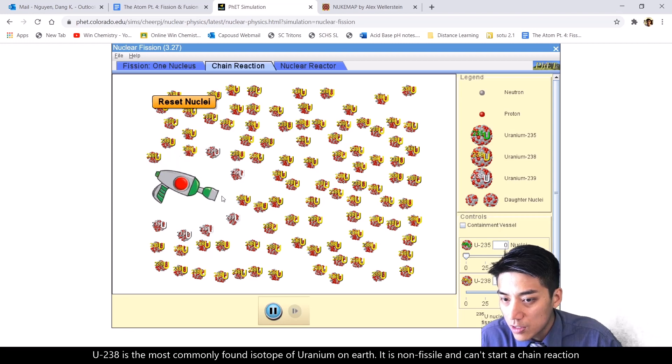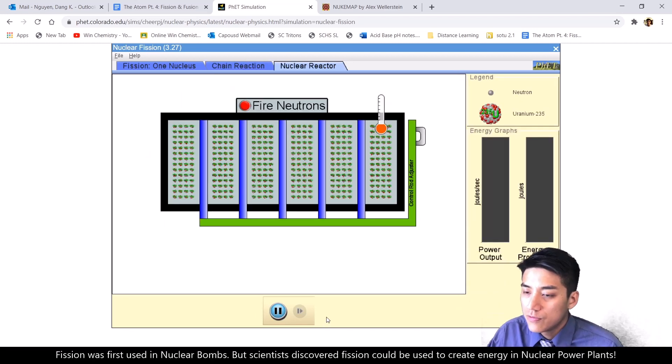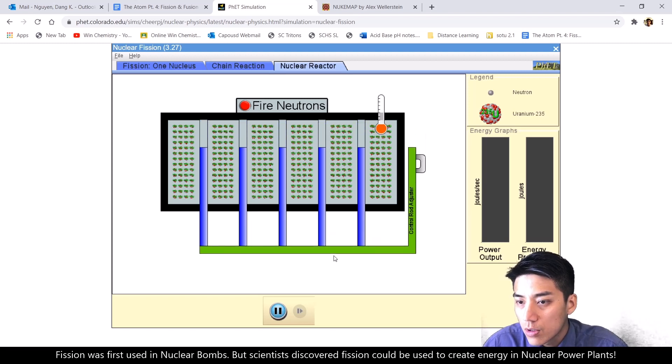So it just absorbs the neutron, and nothing happens. Obviously, fission is a problem because it has led to the creation of atomic bombs. But it has beneficial uses in the modern world as well.